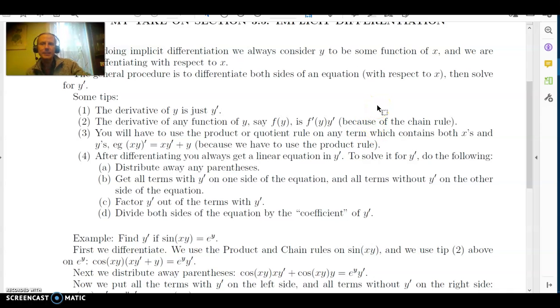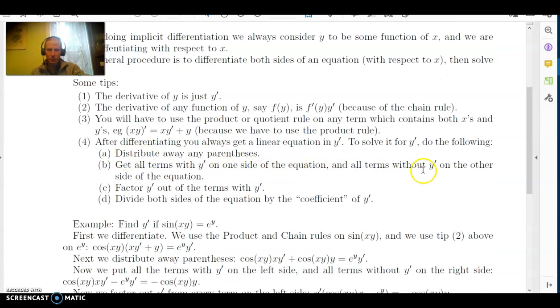Now, the idea here is we want to solve for y prime, because once we've solved for y prime, then we'll get the derivative. After you differentiate, you're always going to get what I call a linear equation in y prime, which means that it's going to be a sum of terms, some of which have y prime in it, and some of which don't. But there won't be anything like y prime squared, or the square root of y prime. It'll always just be stuff times y prime, or just stuff. Now, to solve that equation for y prime, you distribute away your parentheses, you get all the terms with y prime on one side of the equation, and all the terms without y prime on the other side, by adding or subtracting to both sides of the equation, like normal. Then you can factor out the y prime from all the terms with y prime, and then you divide both sides of the equation by whatever the stuff that is being multiplied by y prime is.